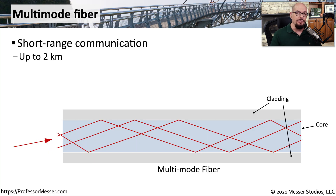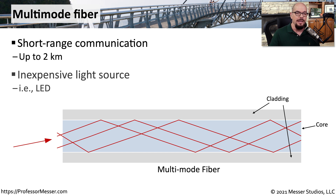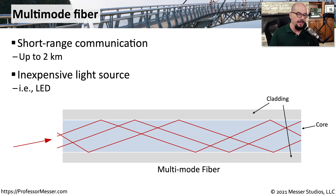When installing fiber in your facility or connecting two devices with a fiber optic connection, you're probably using one of two different types of fiber: multimode fiber or single mode fiber. Multimode fiber is usually for short range communication, often up to two kilometers or so, and it often uses an LED or other inexpensive light source. We call this multimode fiber because the core is larger than the wavelength of light being sent through it, and the light reflects through multiple modes as it travels from one side to the other. You can see an example of the different modes passing through the fiber.